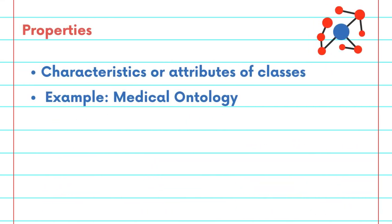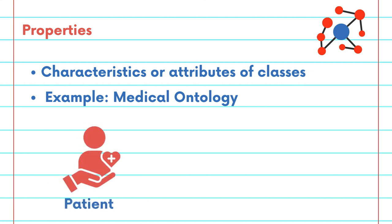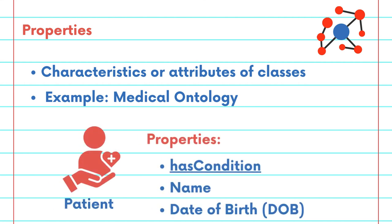Properties are characteristics or attributes of these classes. For example, the class patient might have a property like has condition, which would link the patient to a medical condition that they have.